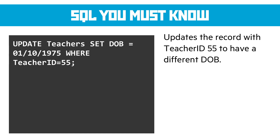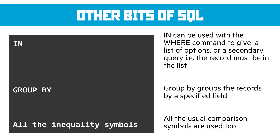There are three other bits to know. IN can be part of the WHERE clause — we can say SELECT * FROM table WHERE something IN something, allowing us to give a list of options or a sub-query, for example WHERE user_id is in a list or in a sub-query that returns a list of user IDs. GROUP BY groups records by a specified field, useful if you have lots of repeated data and want one of each with a total. And then we have all the inequality symbols used in an if statement: greater than or equal to, less than or equal to, not equal to.